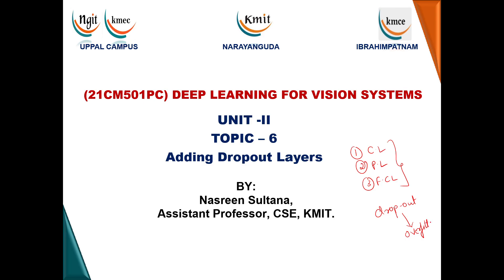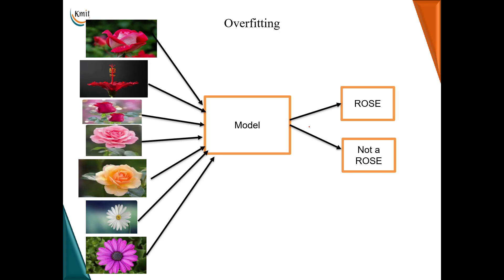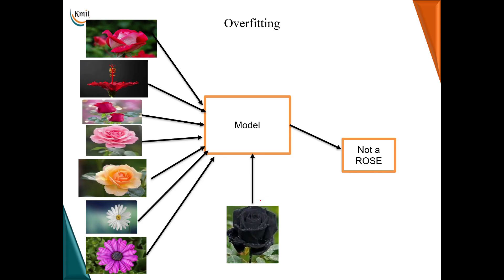Before moving on to the dropout layer, we will first discuss what overfitting is. Overfitting occurs when a CNN model fits too well to the training data, making it difficult to generalize to new data. This can happen when the model recognizes specific images instead of general patterns. For example, if I train a model to classify whether a given image is a rose or not, the model will memorize all the features of the training images.